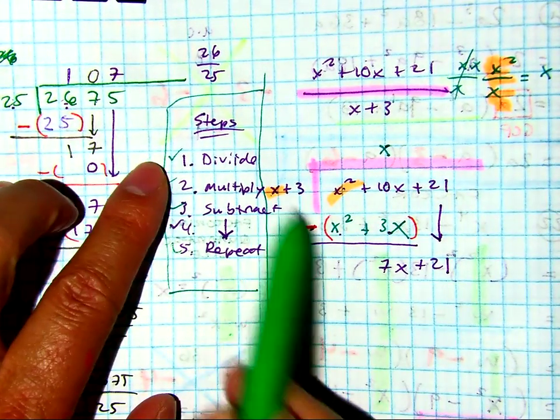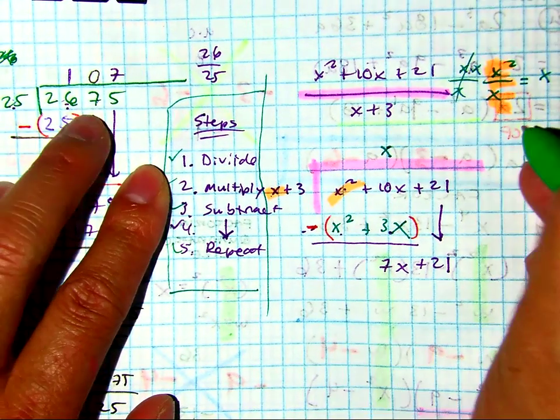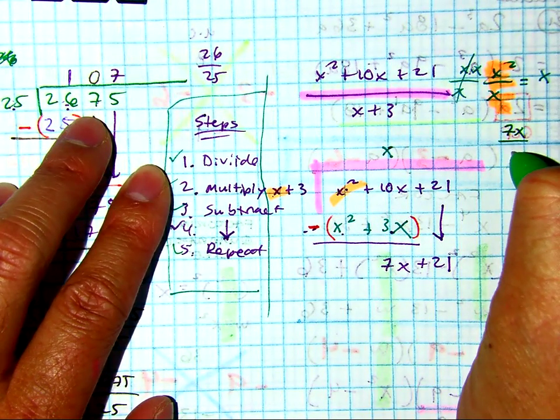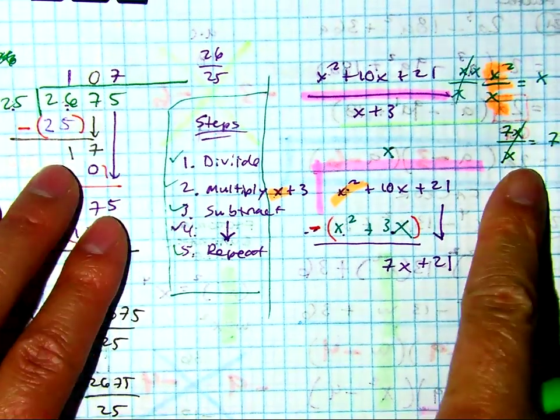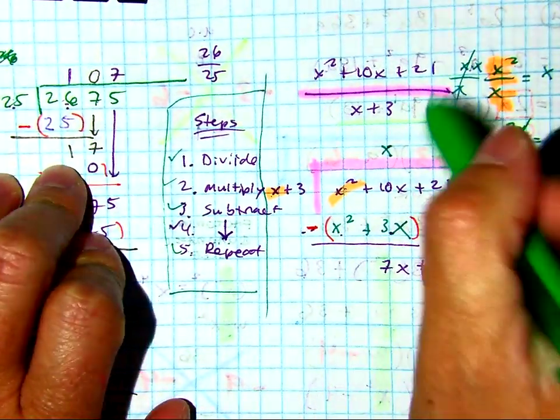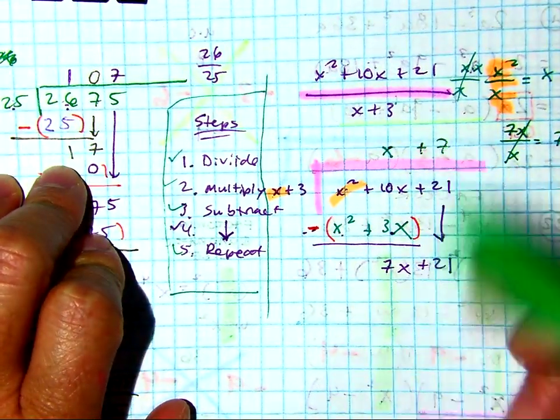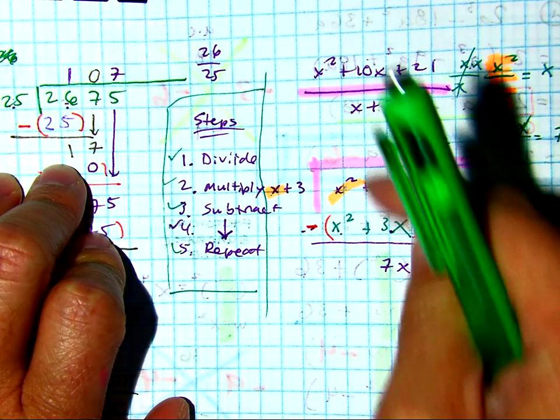How many times does x go into 7x? Your answer is 7. You're just simplifying that. Does that make sense? So I put a plus 7 up here. You'll notice, again, they're all constants. All x's. All x squareds.